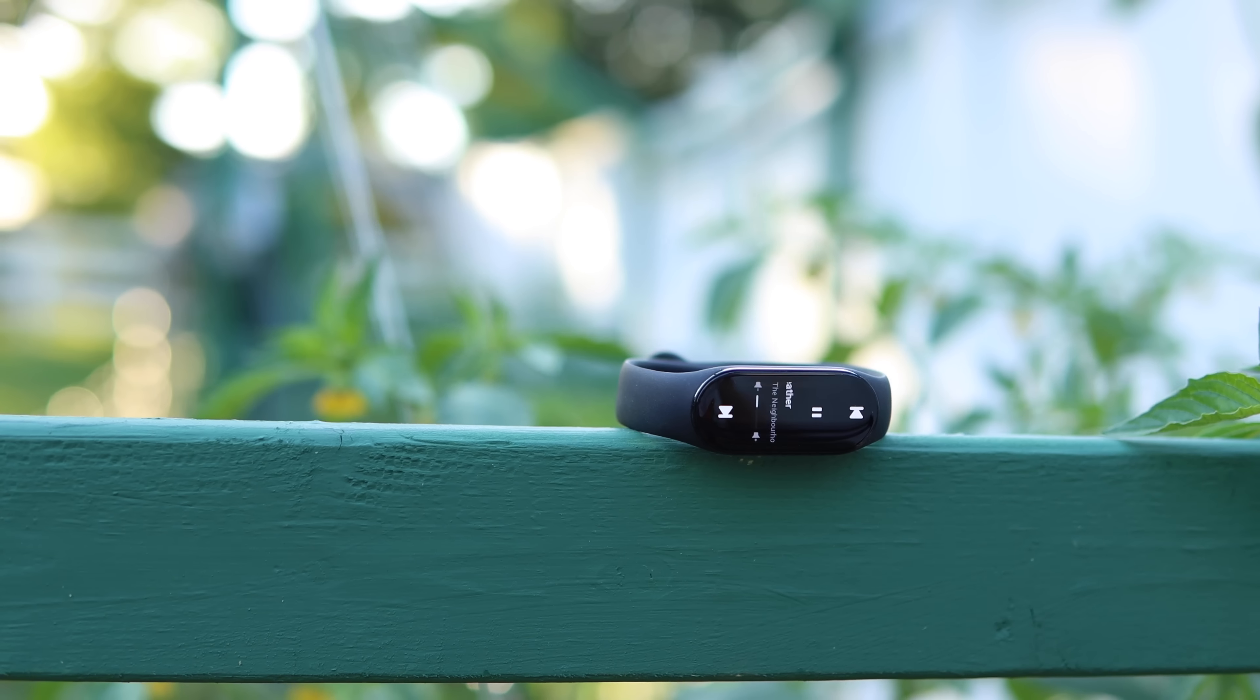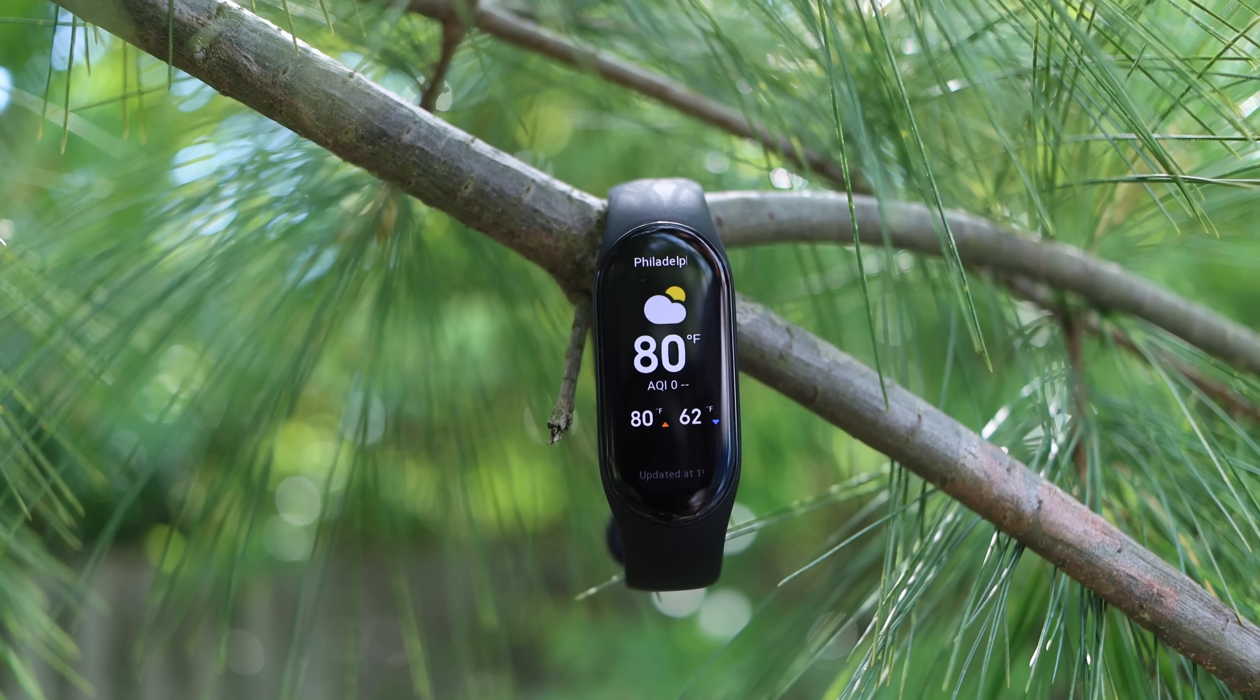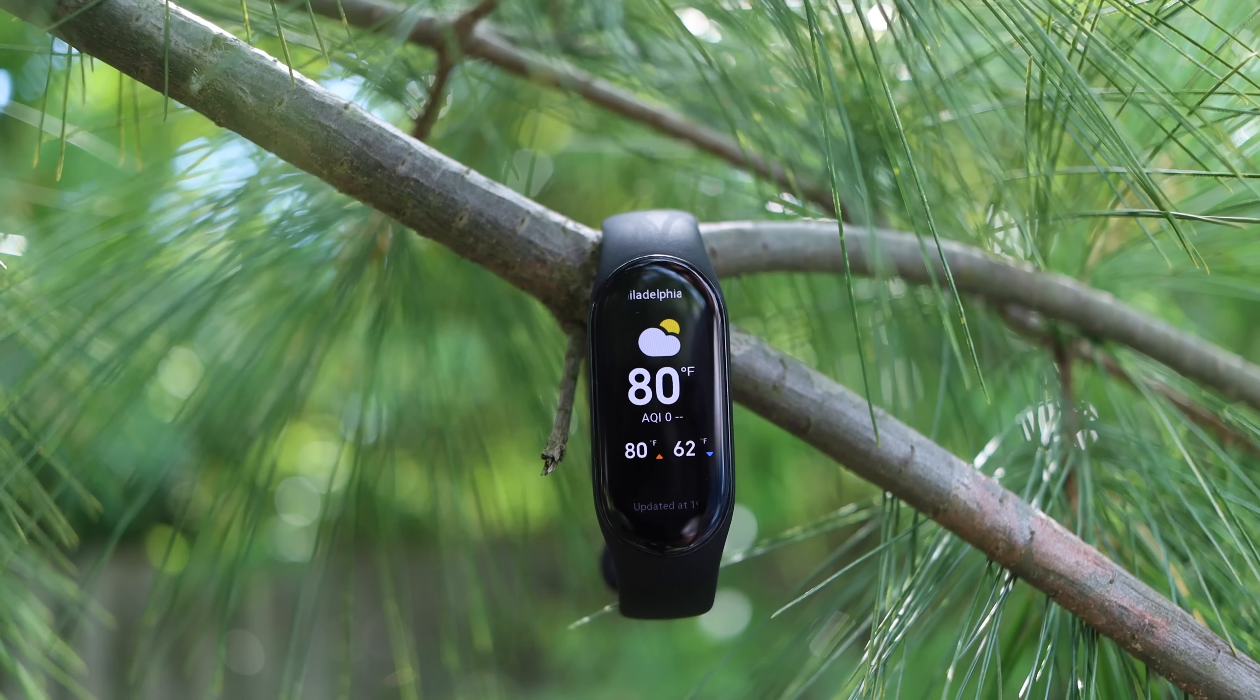The Mi Band 7 clearly has some pretty big shoes to fill, but it does that pretty well. This has some pretty substantial improvements, including a 25% larger display that's brighter, easier to read, and has an always-on display mode. This also has substantially better fitness tracking.